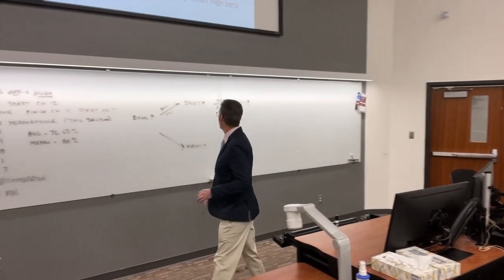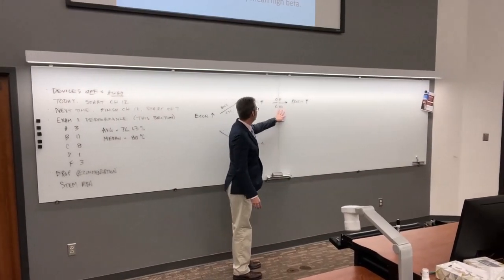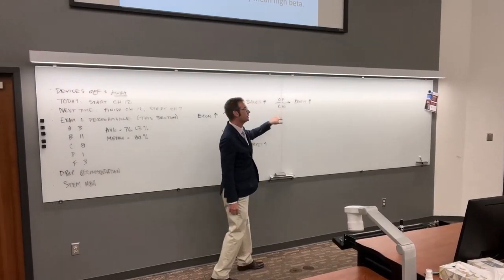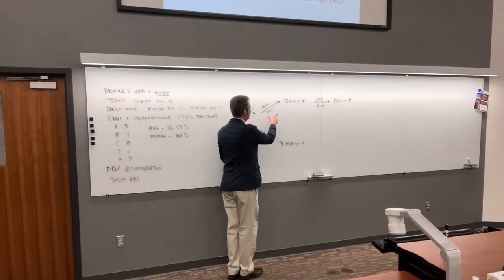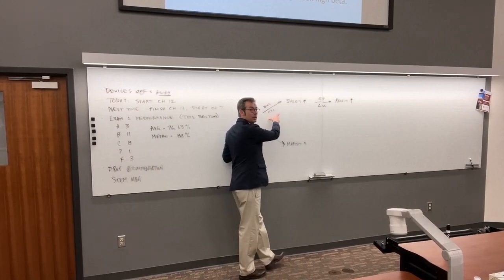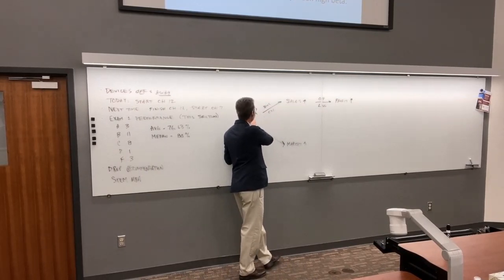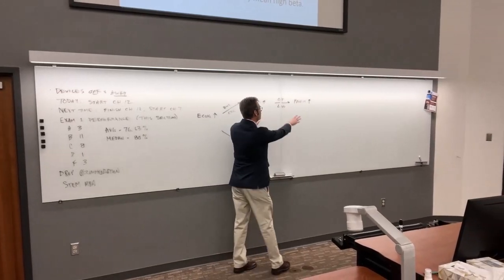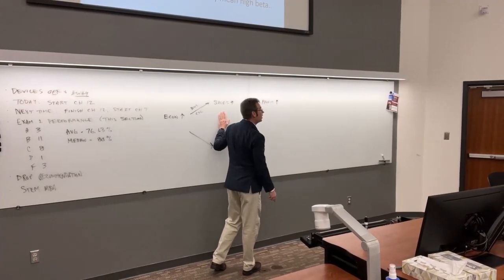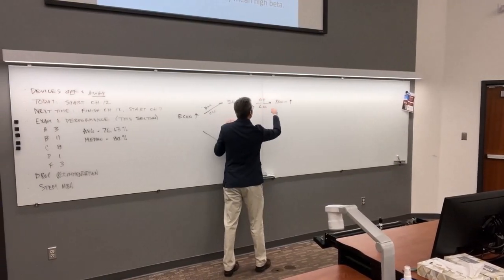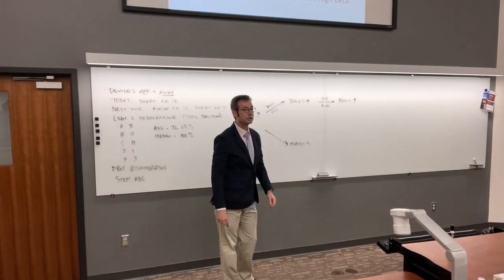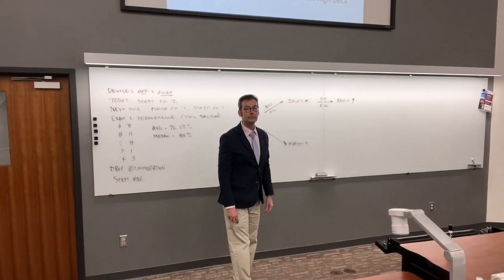Operating leverage magnifies business cyclicality. GM and Honda face the same cyclicality — when the economy is up, their sales rise about the same — but GM's profit rises more because of the magnifying effect that operating leverage has on business cyclicality.